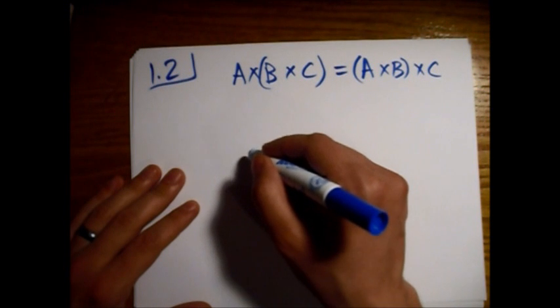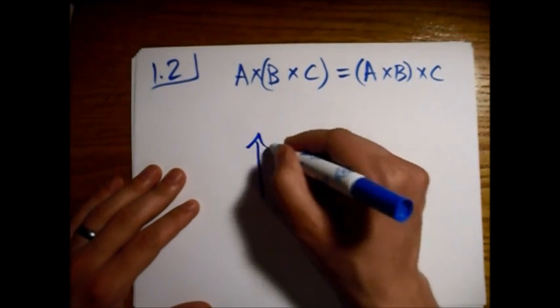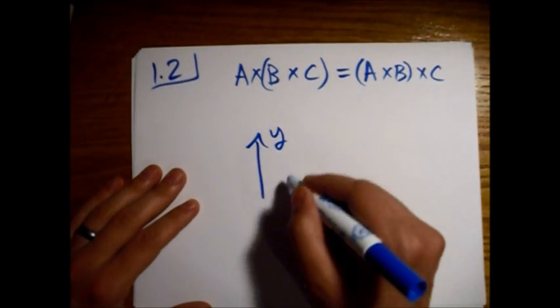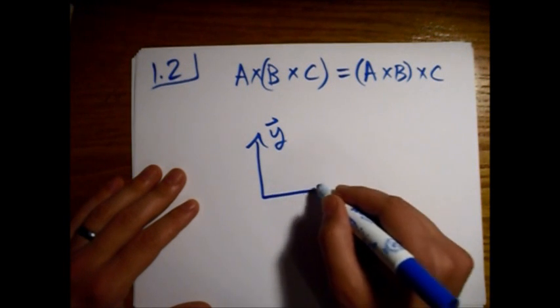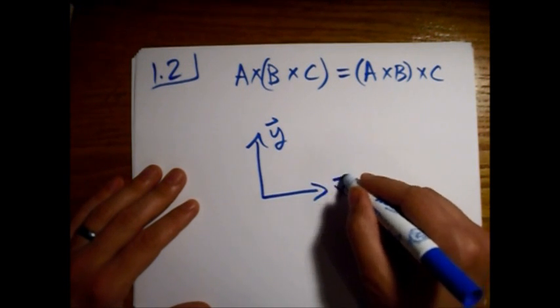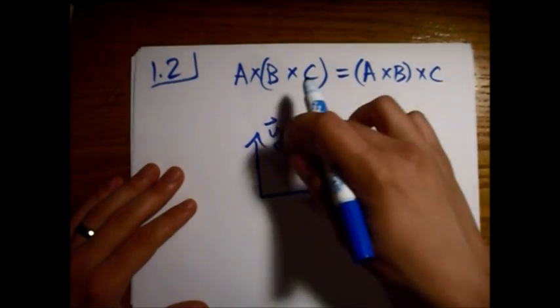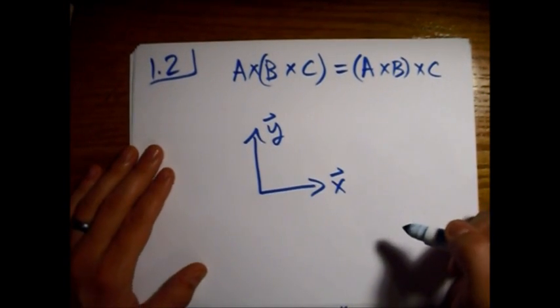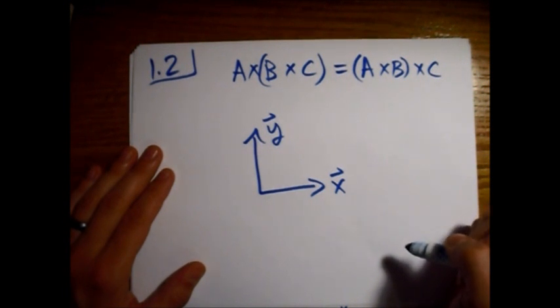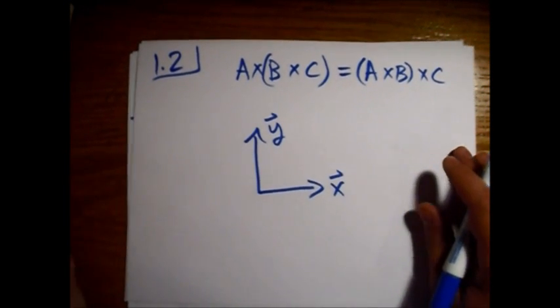Say we were to just have, I'll just draw a vector x in the x direction and a vector y in the y direction. Let's see, how should we write this?